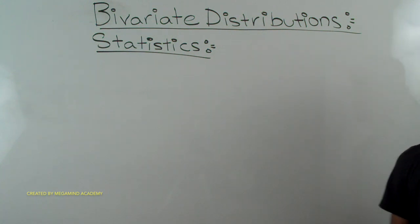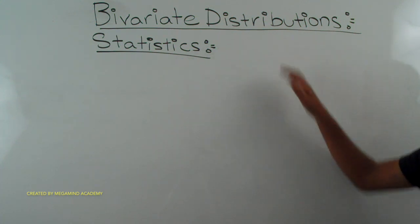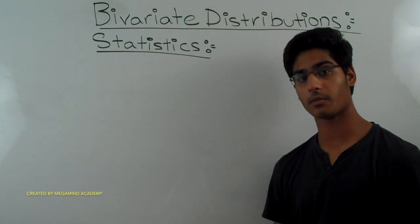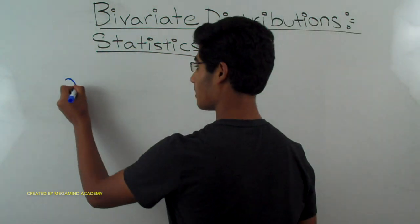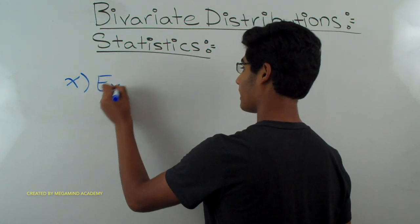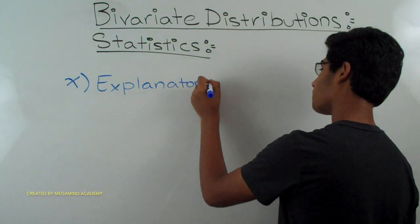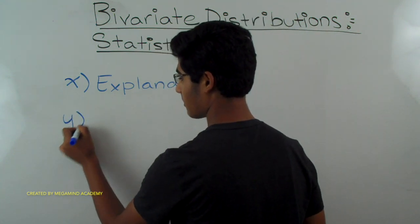Try and take a guess and see if you can figure out what bivariate distributions are. Just from the name itself, you can probably think that bivariate distributions are distributions with two variables. So what are these two variables? Well, the two variables are an explanatory variable and a response variable.